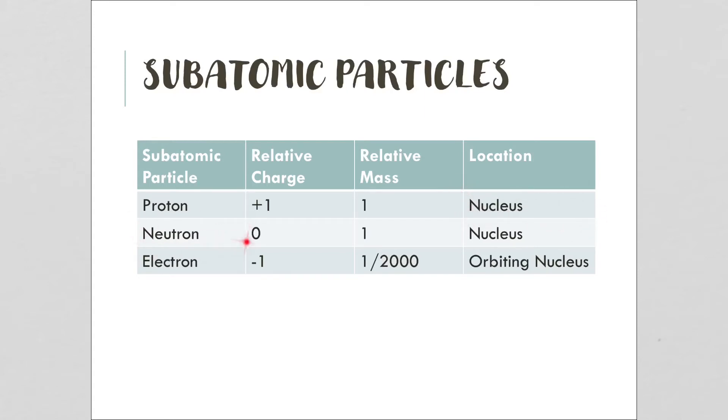Neutrons have a relative charge of zero, no charge. They're uncharged, but they still have a relative mass of one. It's the protons and the neutrons that contribute to the mass of the atom itself, and they are also found in the nucleus.